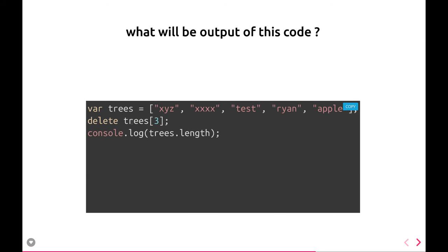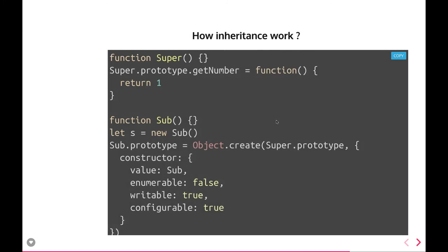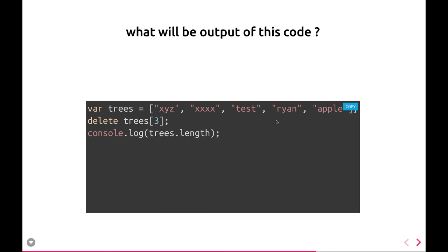What will be the output of this code? In the array, we deleted the third property — at index two, from a five-element array. The length will still be five, but at the third position you will get undefined. Whenever you do delete on an array, it puts undefined at that position and the length stays the same. Delete should be used on objects, not arrays.